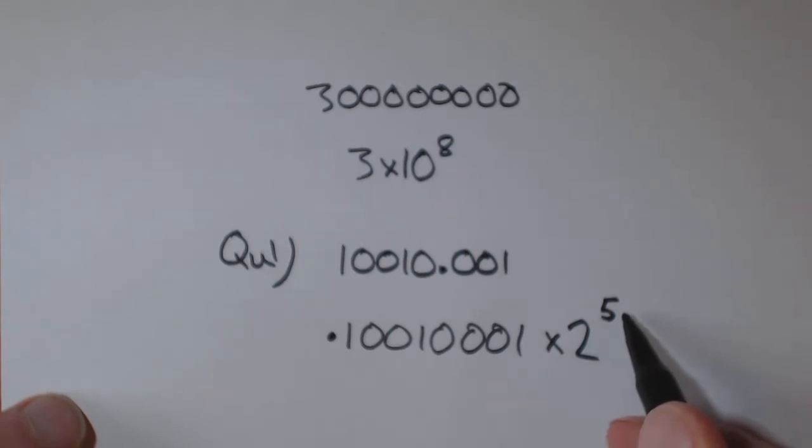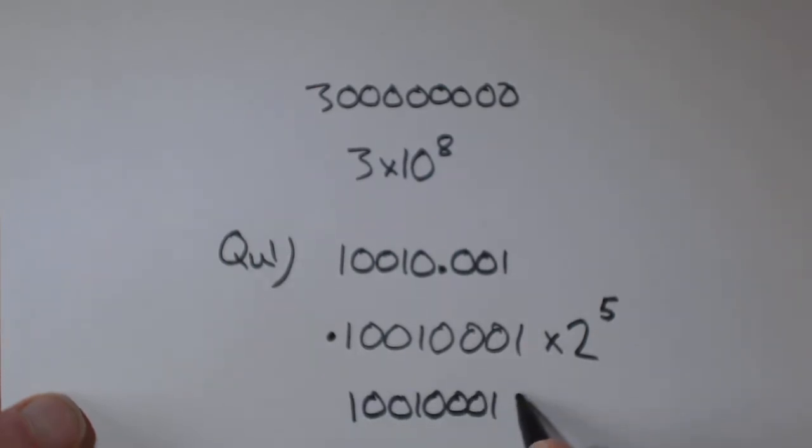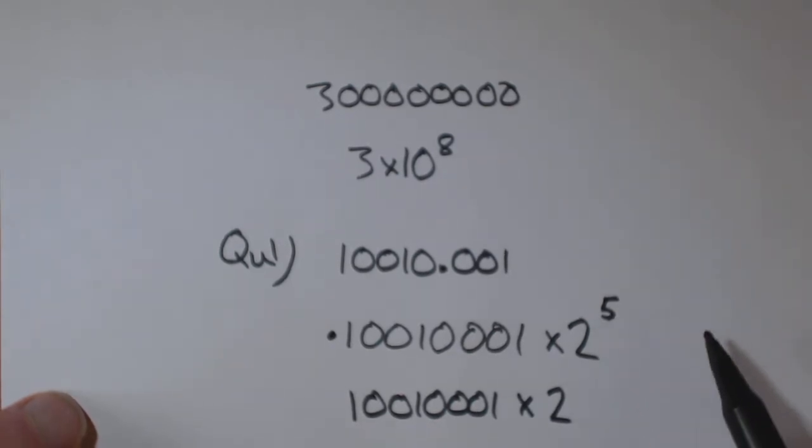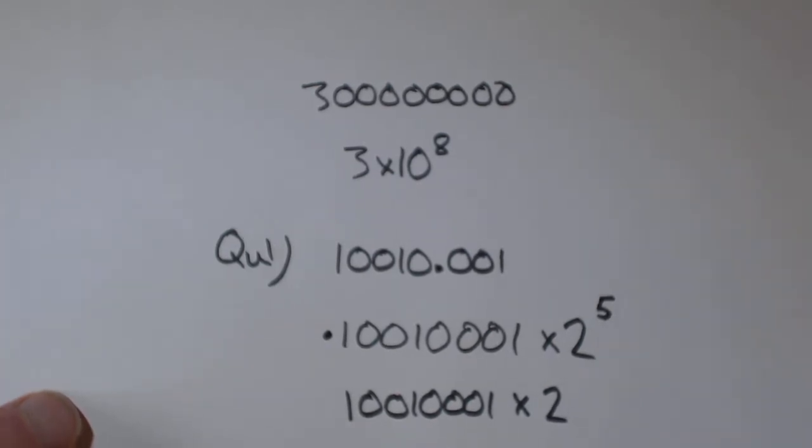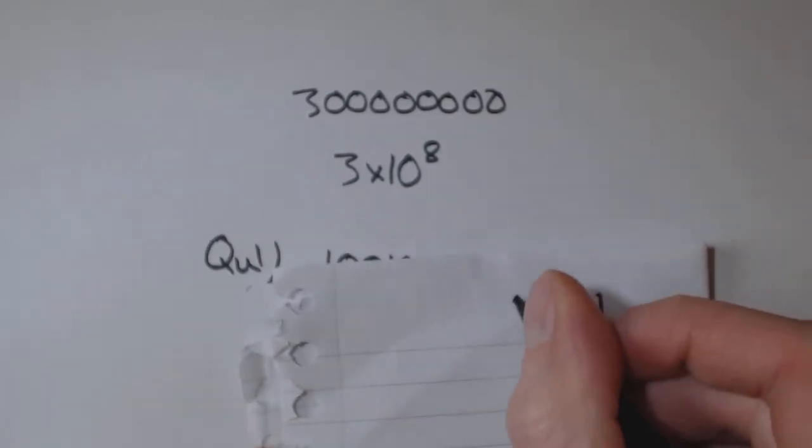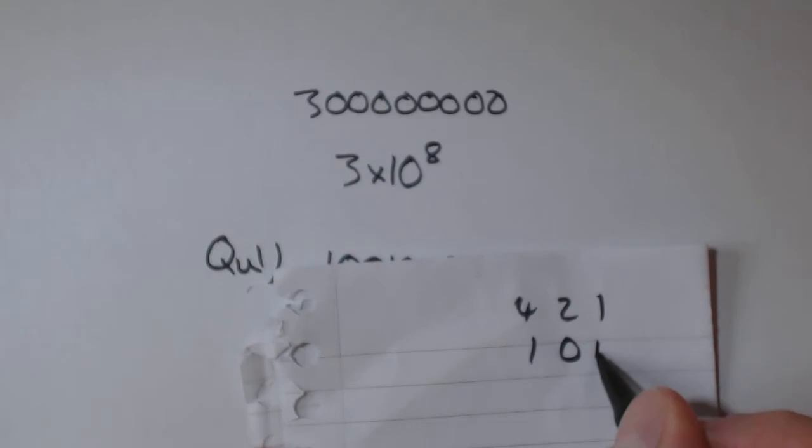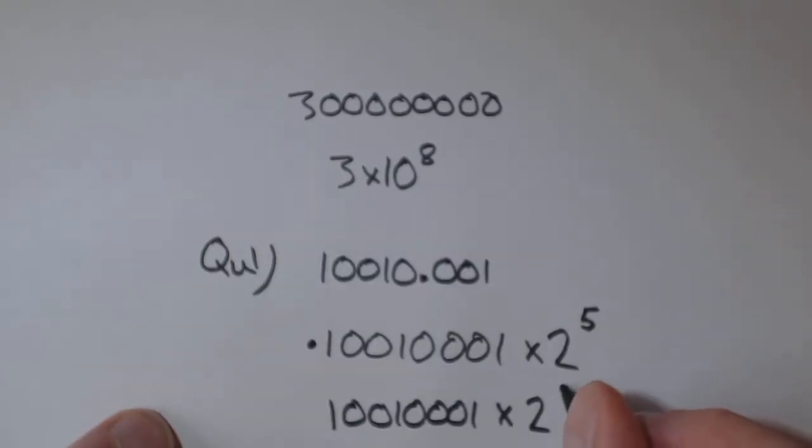However, obviously this isn't decimal, so we need to think about converting that number to binary so we can write it again. We've got 5 in binary which is 1, 2, 4, so it's 1, 0, 1. So that is 1, 0, 1.